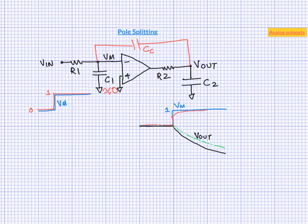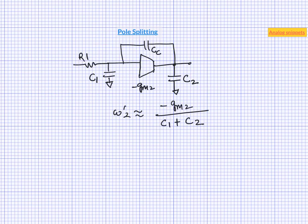Now let us consider the movement of second pole. We said in the last video that at higher frequencies CC acts as a short circuit and because of this shorting, the output pole tends to move to this frequency.